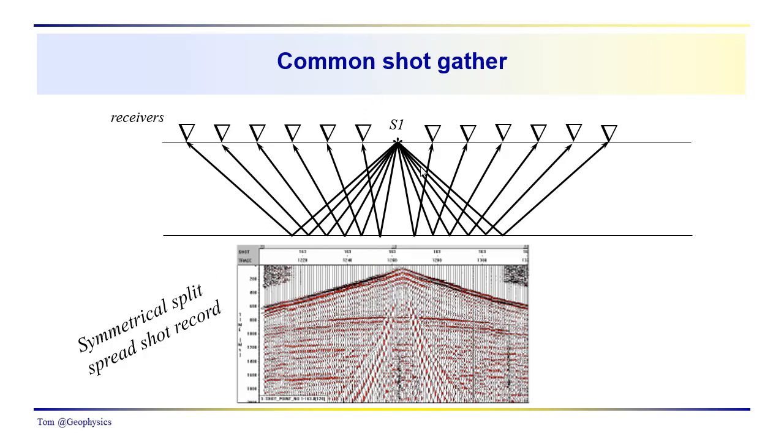We've been referring to this particular geometrical arrangement of shot and receivers as a symmetrical split spread shot record, and this would be an example of some real data that shows the different events that you see in the shot record.